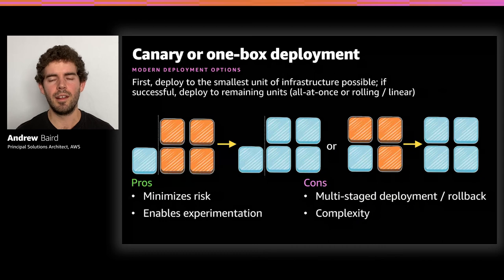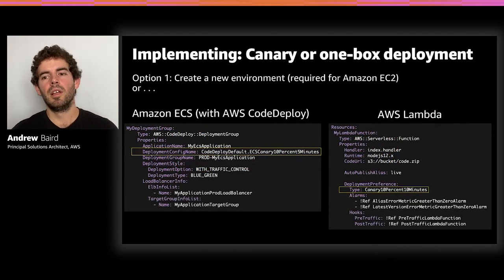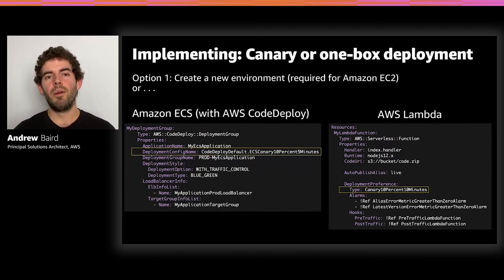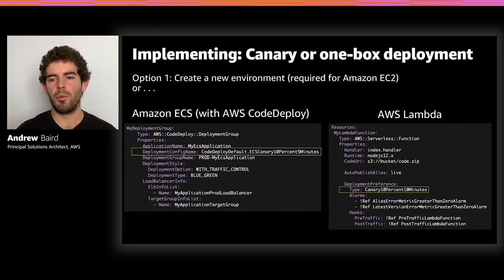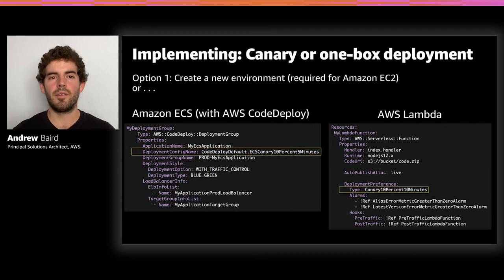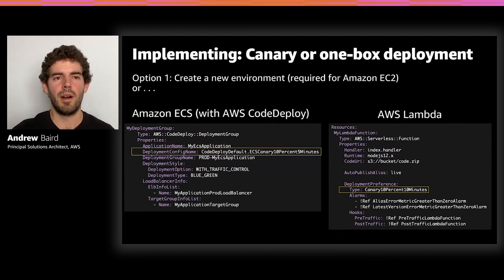That might bring additional complexity — these two environments always serving production traffic need to be kept in sync. Tooling needs to be aware there's now an independent environment. For implementing canary or one-box on EC2, you create a new environment. With ECS and Lambda you also have that option — rather than just a production environment, create another named environment for your containers or Lambda function. With ECS properties, you set 10% of the new container image version to receive traffic before the other 90% is shifted. On Lambda, shift 10% for 10 minutes to the new alias, and after that 10 minutes the other 90% immediately shifts to the new version.